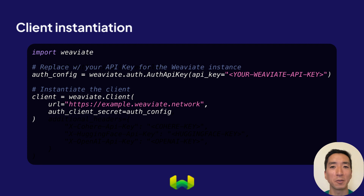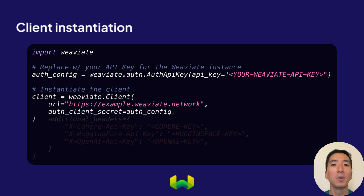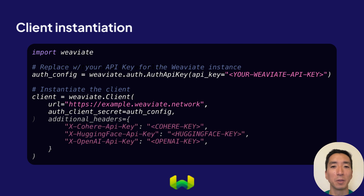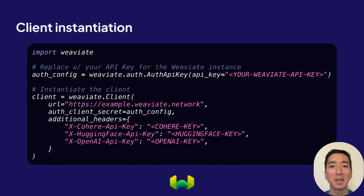If you're using a vectorizer service like Cohere, HuggingFace, or OpenAI, you'll also need to provide API keys for them. After instantiating your client, you can start making requests to your VV8 instance.